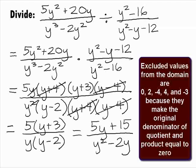Note that the values that would be excluded from the domain of the original rational expressions are 0, 2, negative 4, 4, and negative 3. Those are the values that make the original denominators equal to 0.